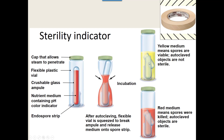We now also have indicator tape that looks like masking tape with pale white lines. At autoclave temperature for 15 minutes, these pale white lines undergo a chemical reaction and turn black. This is what the tape looks like after autoclaving. It's a lot cheaper than using all those vials.